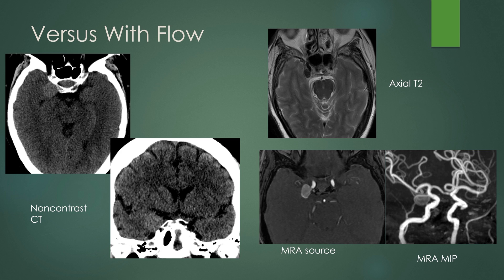An aneurysm with flow looks different. On non-contrast CT it can be very subtle — slightly hyperdense compared to adjacent brain. On the coronal view you see loss of CSF around the temporal lobe indicating a mass-occupying lesion. On axial T2-weighted imaging there's a saccular outpouching that is very hypointense on T2 due to flow. On MRA source it is bright because of flow, and on the MRA MIP you also see it pooching out to the side.